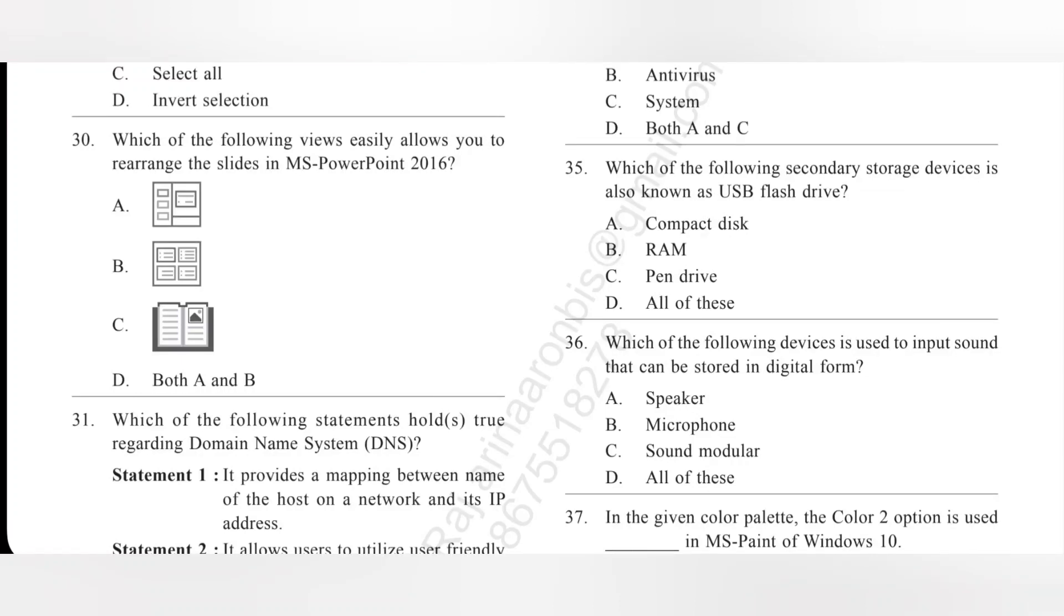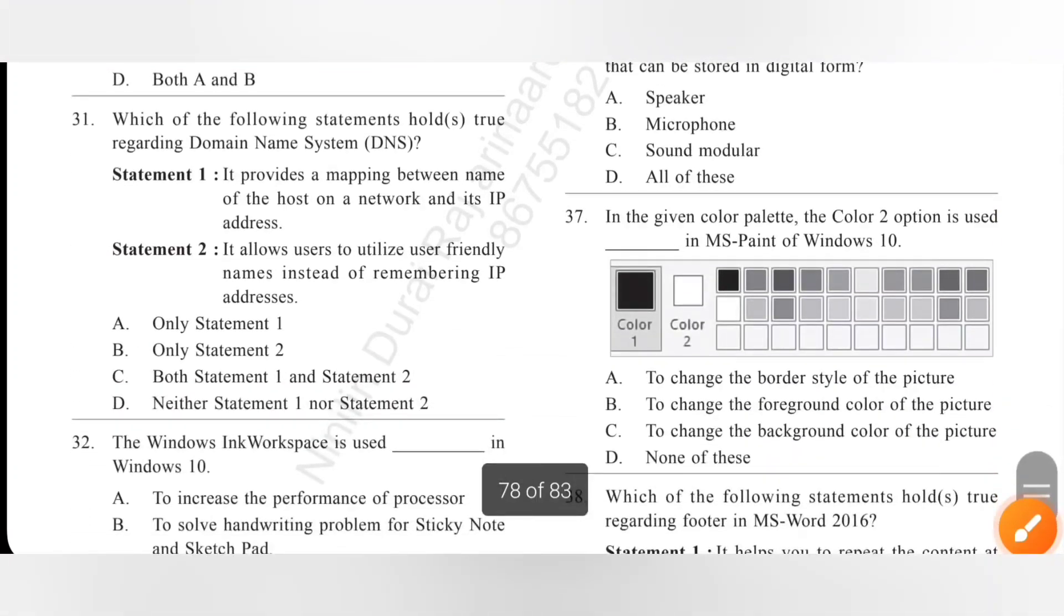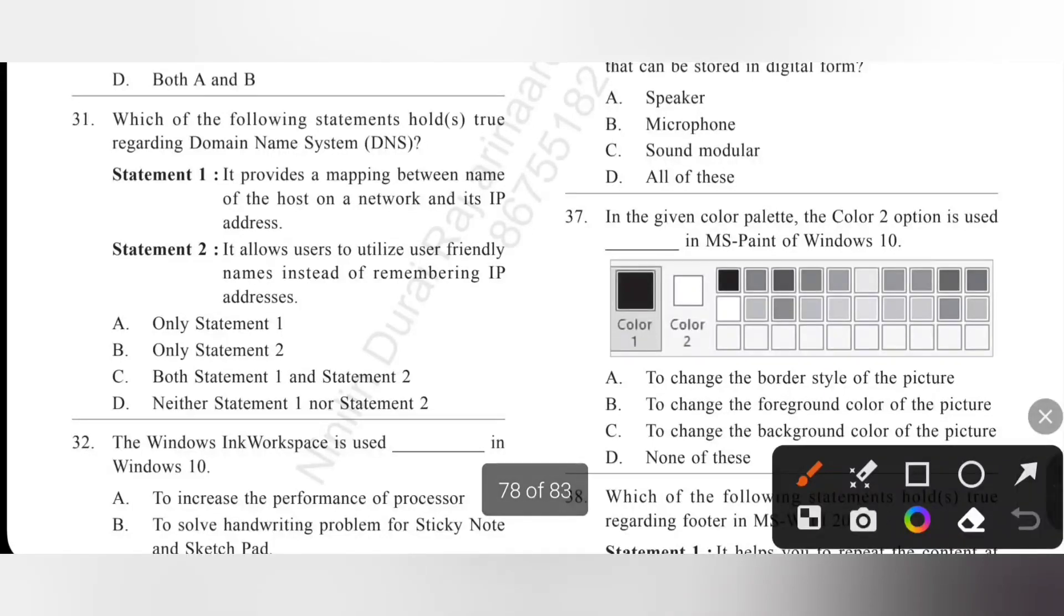Question 31: Which of the following statement holds true regarding domain name system DNS? Statement 1: It provides a mapping between name of the host on a network and its IP address. Yes, it is true. Statement 2: It allows user to utilize user-friendly name instead of remembering IP address. Yes, so both statement 1 and 2 are true. So, option C is the correct answer. It is an important question.